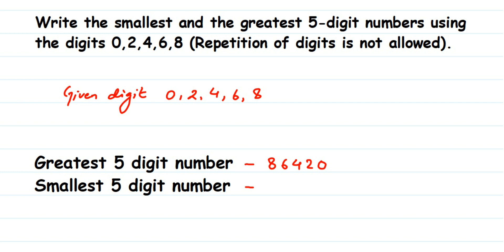Now let's write the smallest five-digit number. If I write the digits in ascending order, it becomes 02468. But this is only a four-digit number, not a five-digit number, because there is a zero in front of the number.